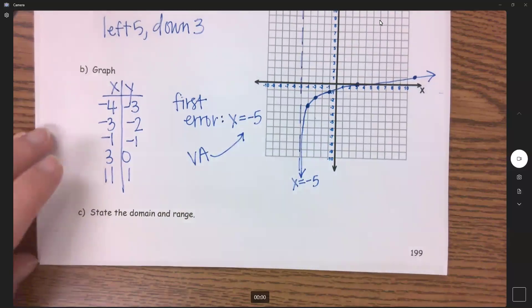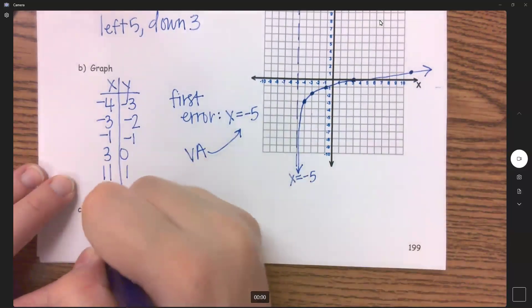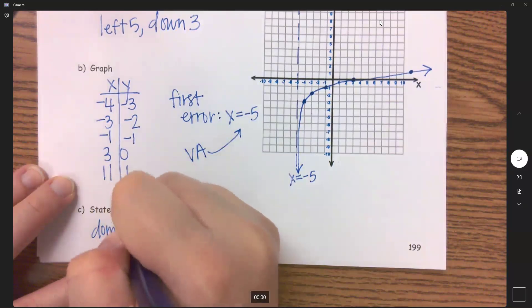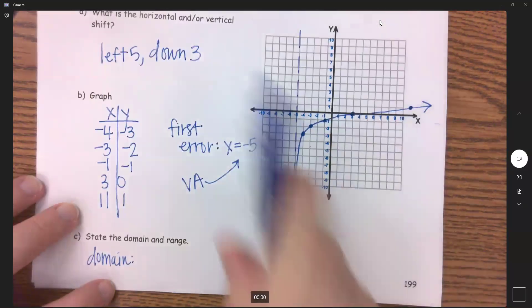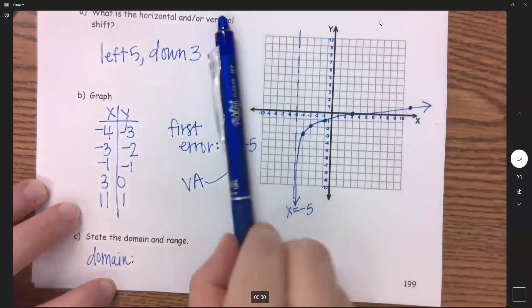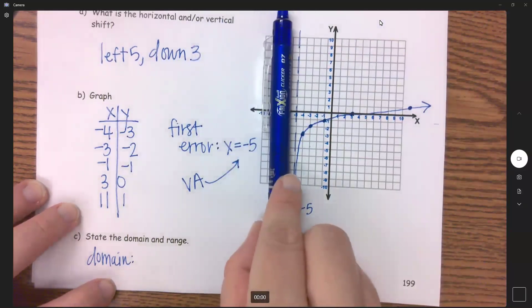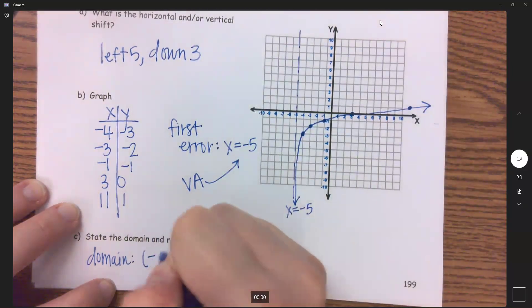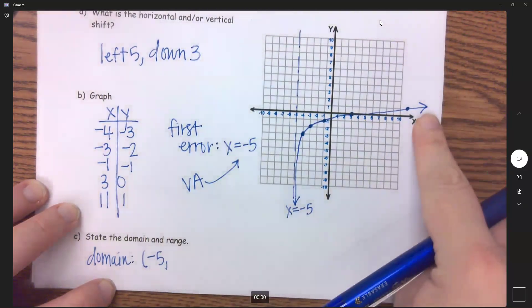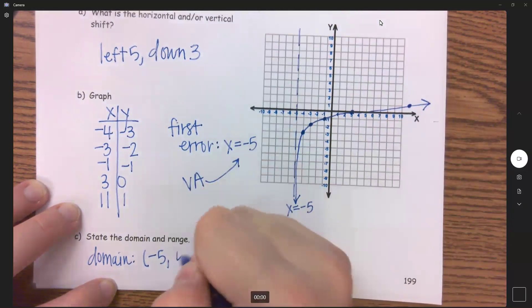So to end this, let's state the domain and range. From the graph, we can go left to right. When I start from the left, the first thing I encounter is that vertical asymptote. So we're at parenthesis negative five, and then it's going to keep going forever, so positive infinity.